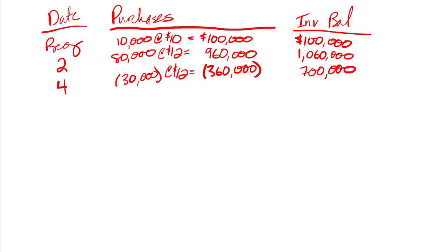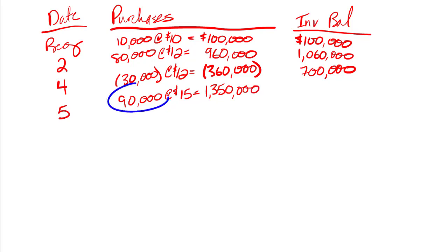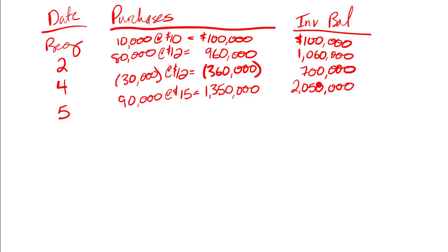The last purchase is transaction number five: 90,000 units at $15 each for a total of $1,350,000. That gives me a grand total of $2,050,000. This number right here is cost of goods available for sale.